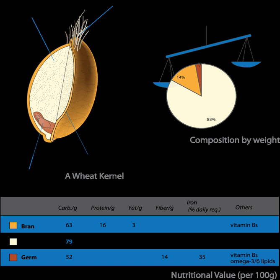George Washington had a recipe for small beer involving bran, hops, and molasses.